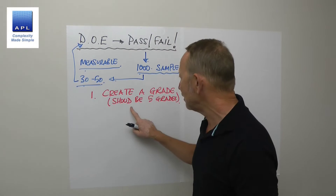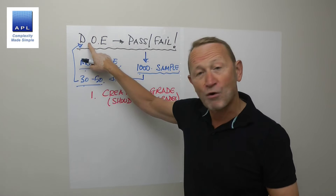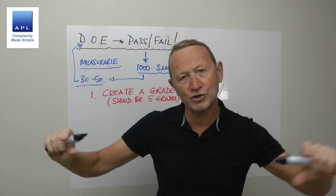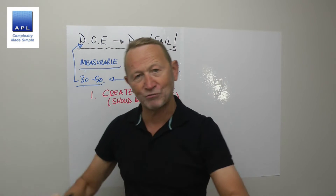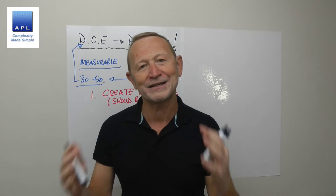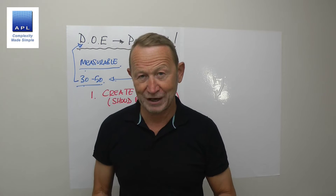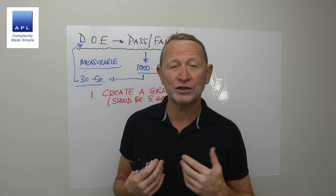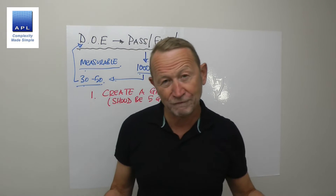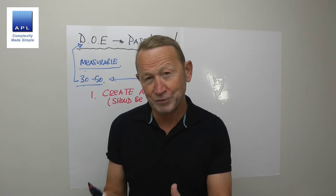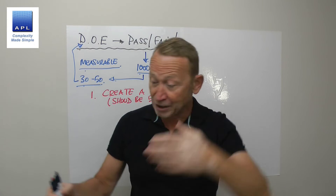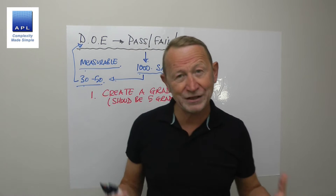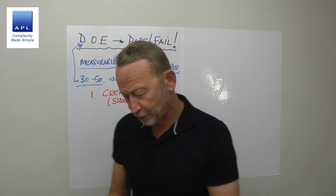Obviously when you do this, you need to make sure you know where every test piece came from, because you're going to say: for treatment number two, here's the grading we created; for treatment number three, here's the grading we created. So choice number one: create a grade. Works very well, especially when you grade them visually like that. The measurement system is going to be quite good, because you can see the worst and you can see the best, and you're grading everything relative to one another.